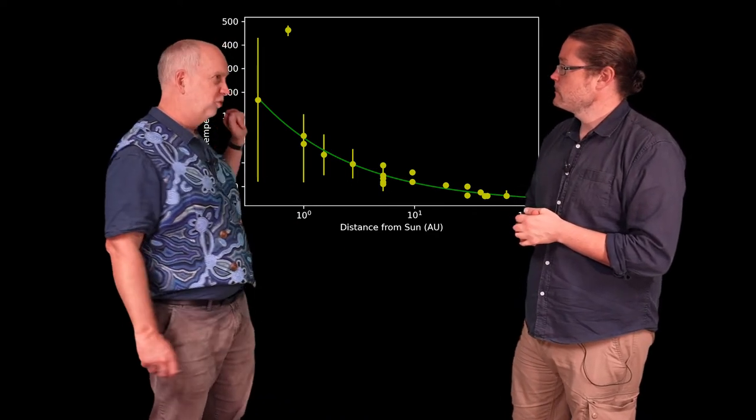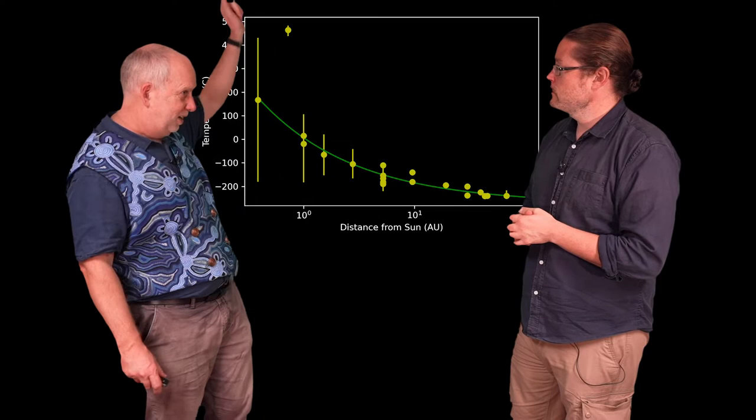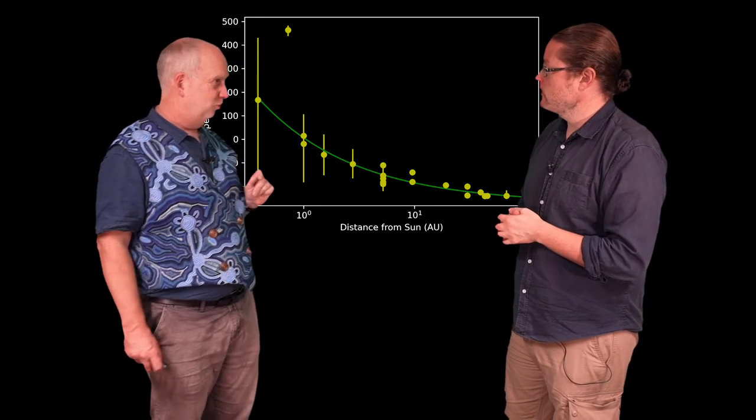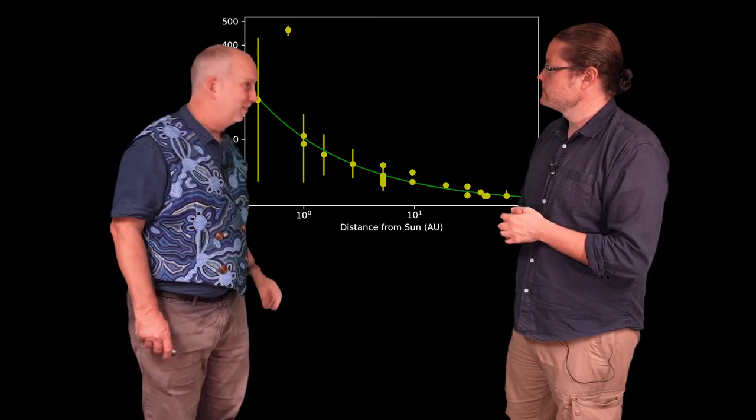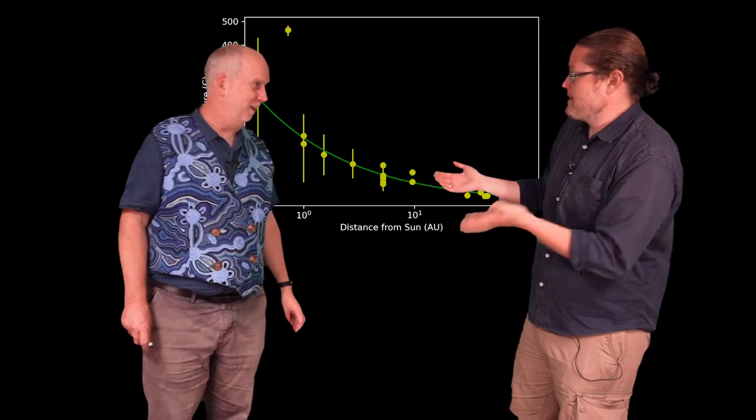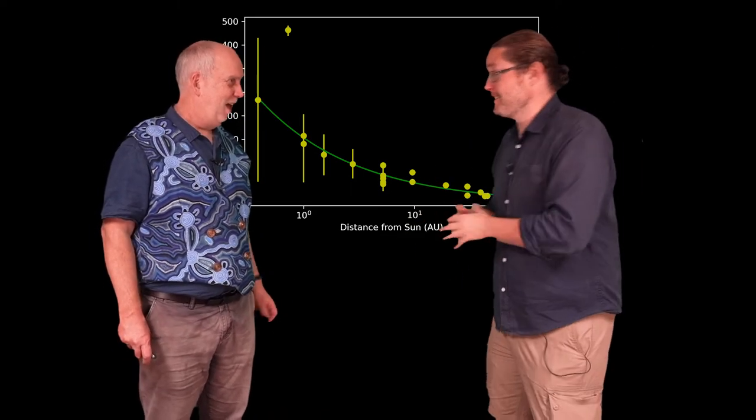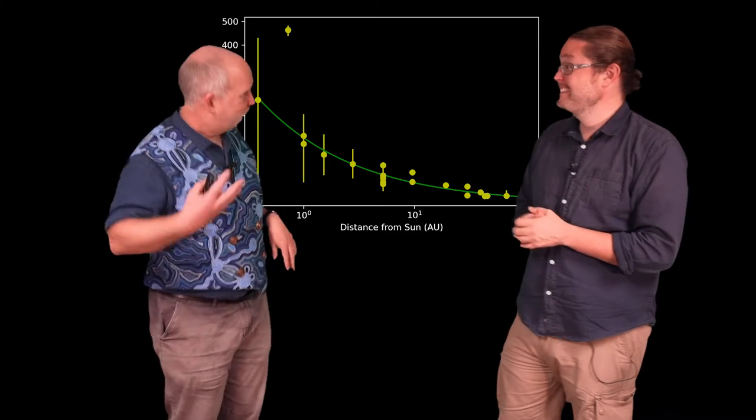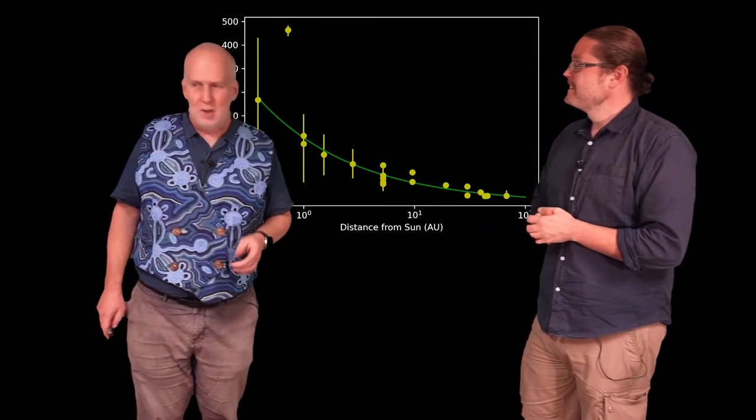But also what I've shown is the range of temperatures, so you see the vertical lines, because a lot of planets the temperature is not always the same. Well, I mean on Earth we know that, right? Central Australia is very different than say Antarctica, and Central Australia in the middle of summer is very different from Central Australia in the middle of winter.